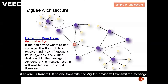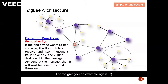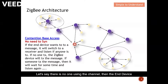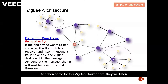If the end device wants to transmit a message, it will switch to receiver mode and listen to see if anyone is transmitting. If no one is transmitting, the ZigBee device will transmit the message. If someone is transmitting, it will wait for some time and listen again. For example, this end device wants to send a message to the coordinator. Before sending, it switches to receiver mode to listen if anyone is using the channel. If no one is using the channel, it sends the message to the ZigBee router.